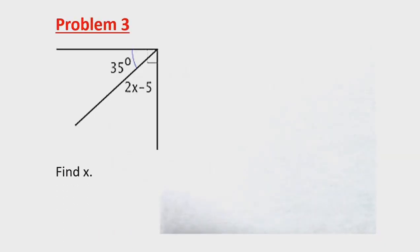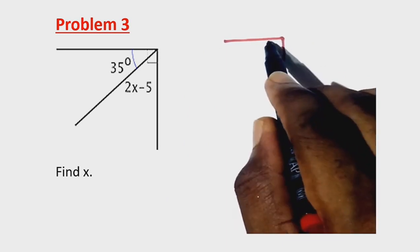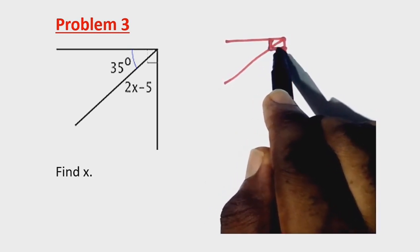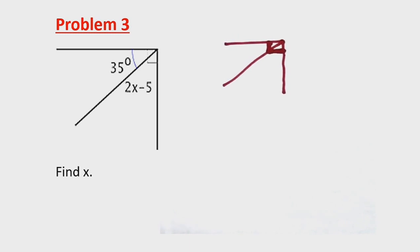The next problem, problem 3, is a diagrammatic problem. Looking at the diagram, there are two angles: 35 degrees and 2x minus 5. The question asks us to find x. The diagram shows a right angle, and a right angle equals 90 degrees. In other words, the two angles inside the diagram should sum up to 90 degrees, meaning their addition gives a complementary angle.